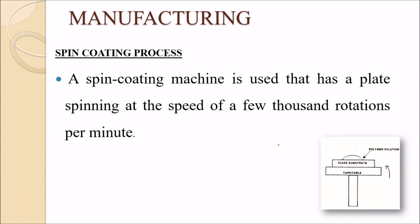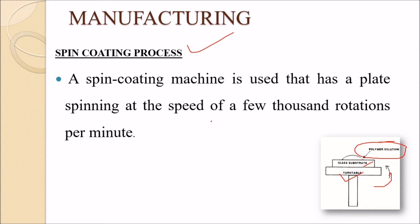The first manufacturing technique is spin coating. A spin coating machine uses a plate spinning at a few thousand rotations per minute. The glass substrate is placed on the turntable and the polymer solution is applied using this process.